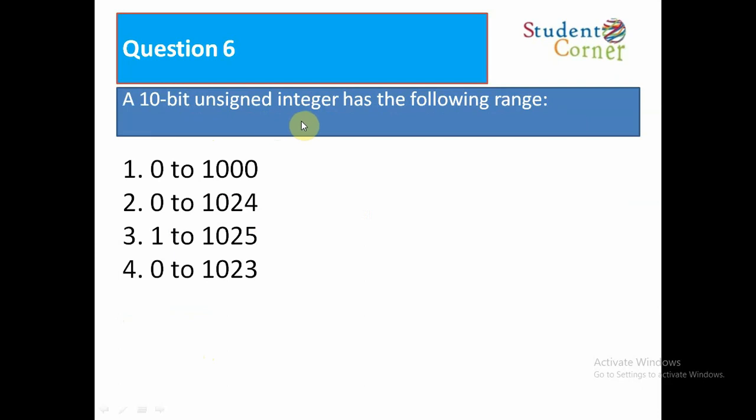A 10-bit unsigned integer has the following range. Option 1: 0 to 1000. Option 2: 0 to 1024. Option 3: 1 to 1025. Option 4: 0 to 1023. The option is 0 to 1024.